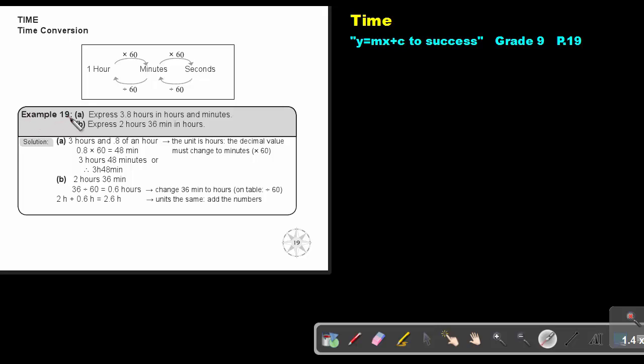Let's look at example 19. Express 3.8 hours in hours and minutes. Now remember, the 3 is already in hours. So I must just take this 0.8 of an hour to minutes. So 0.8 of an hour, I want to take from hours to minutes, so I will multiply by 60. So 0.8 multiplies 60 and that will be 48 minutes. So this will give me 3 hours and 48 minutes.